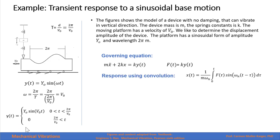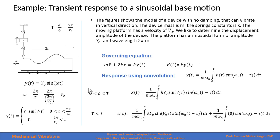Since the forcing function is defined piecewise, we will use the convolution integral and divide the solution into two parts: one for t less than the period of the function, and one for t greater than the period. For the first part we apply only the sinusoidal function, and for the second part the applied force is zero from t equals the period onward, so that integral equals zero.